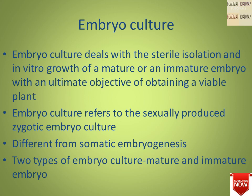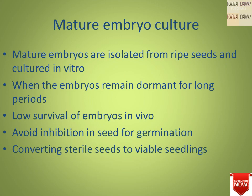The two types of embryo culture are mature and immature embryos. Mature embryos are isolated from ripe seeds and cultured in vitro conditions. When embryos remain dormant for long periods there is low survival of embryos in vivo, so this helps to avoid the inhibition and seed dormancy for germination.